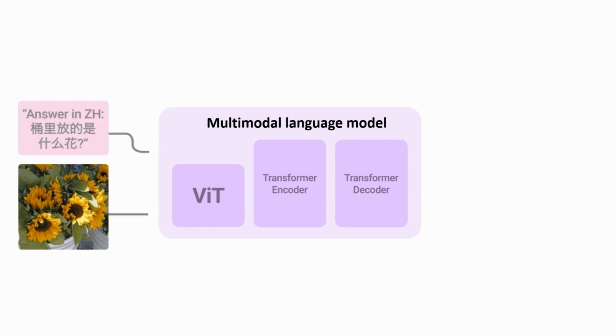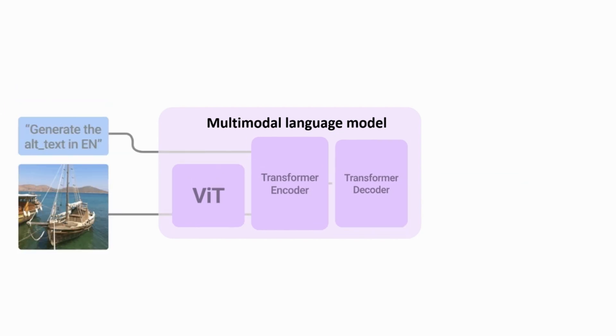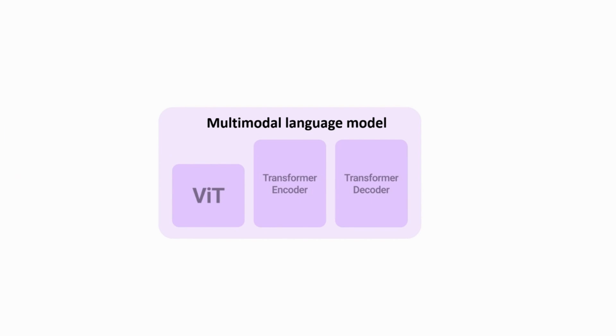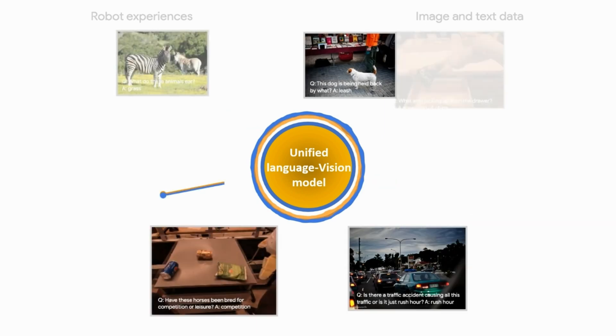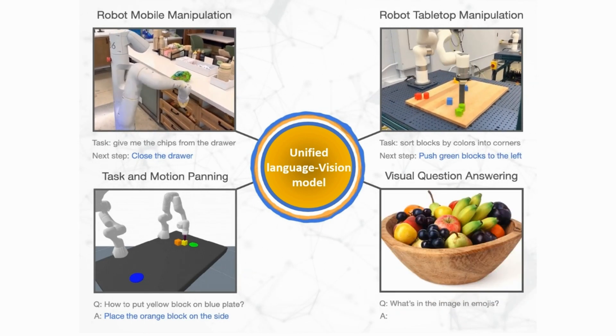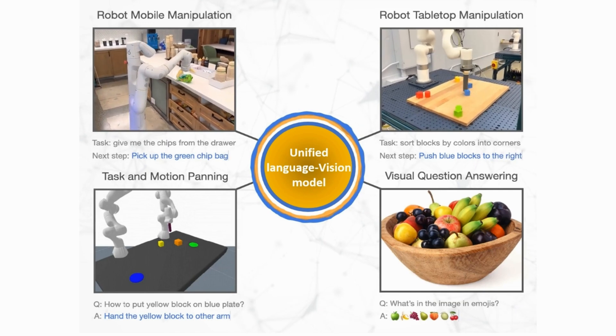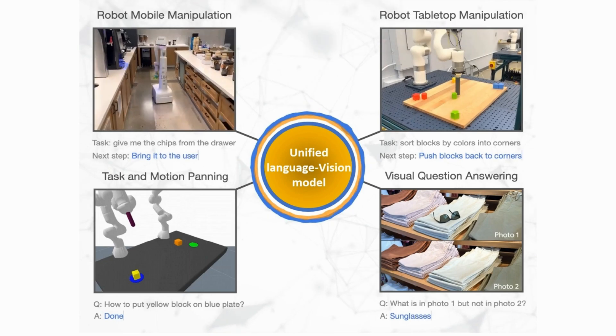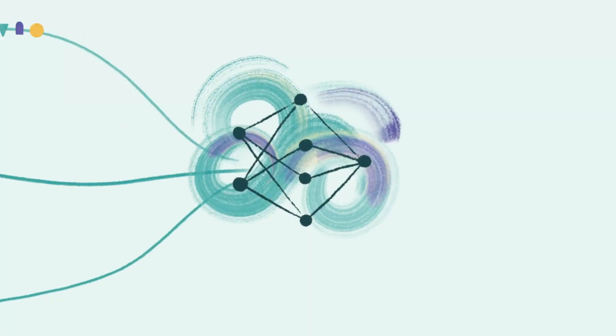GPT-4 employs a vision encoder model to process visual input and a decoder language model to process text input, resulting in a highly capable vision and language model. This unified language image model allows GPT-4 to perform a wide range of tasks, including explaining jokes and answering visual questions in different languages. Overall, GPT-4 represents a significant advancement in learning objectives by combining knowledge from both language and vision domains.